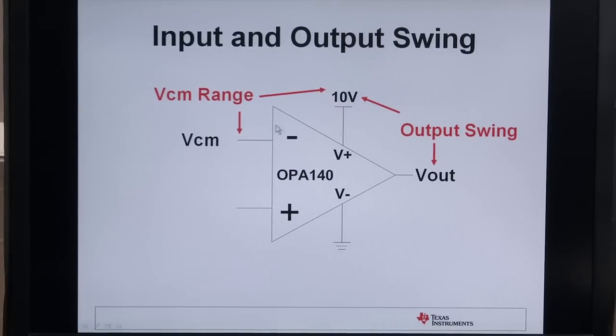Input swing limitation. The common mode range is relative to the positive supply and the negative supply, and when you exceed that range the output will become non-linear. The same thing with the output swing. The output can swing close to the positive supply and close to the negative supply but will become distorted and non-linear if you exceed the output swing specifications.